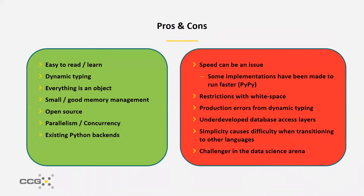Some general pros and cons of Python, starting with the pros. It's very easy to read and learn. When developing Python, they put a lot of focus on simplicity — they got rid of a lot of unnecessary syntax seen in other languages and tried to make it as similar to natural speaking language as possible. It also has dynamic typing, so when you're using a variable, you don't have to declare what type it is; it just assumes the type once you put data inside it, which is convenient.